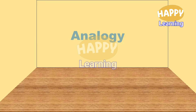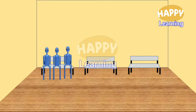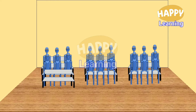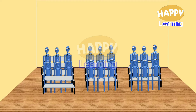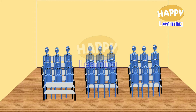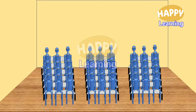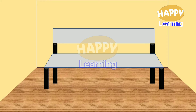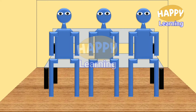Now, let us have an analogy. This is a classroom with benches and students sitting. In general, three students may be accommodated in one bench. Here, three students are accommodated, and let us name them as U, F and V.